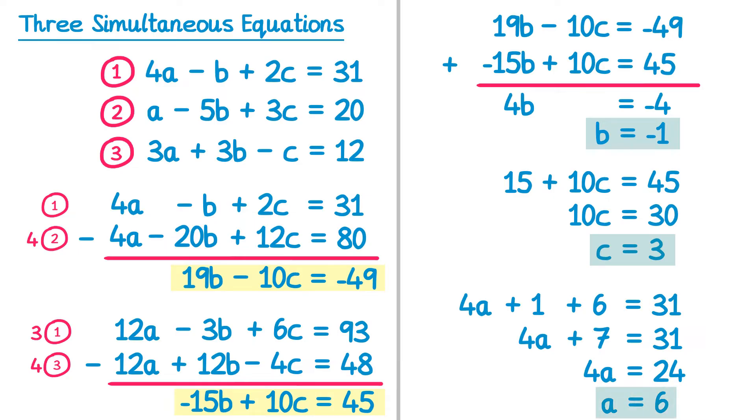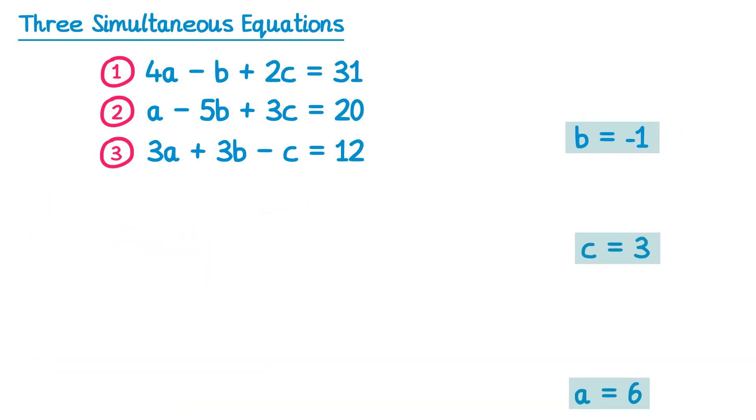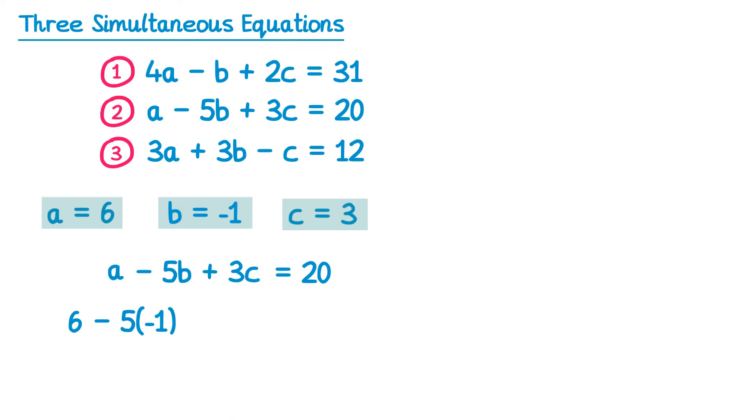So I've now got all of my solution, I know a, b and c. It's usually a good idea at this point just to substitute all of these values back into one of the equations to check you're definitely correct. Let's go for the second one. So the second one is a take 5b plus 3c equals 20. So a, which is 6, take away 5b, which is 5 lots of negative 1, plus 3c, which is 3 lots of 3, needs to equal 20. Well I've got 6. Negative 5 times negative 1 is positive 5, and 3 3s are 9, and this does indeed equal 20. This is a good check to make sure you've not made any mistakes.